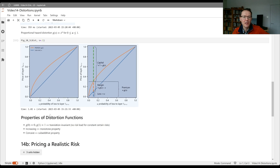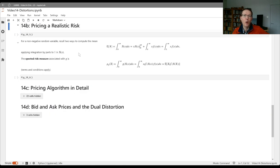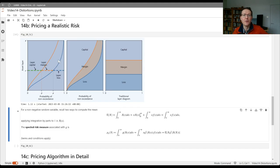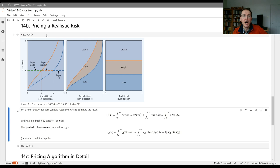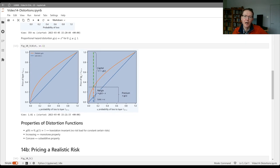What I want to do today is continue this and discuss pricing a more realistic risk. The way this is typically done, assuming you've loaded the libraries from the previous video, we're now going to look at this figure, which is figure 10.5 from the Pricing Insurance Risk book, which should be compared to figure 10.3 that we had last time.